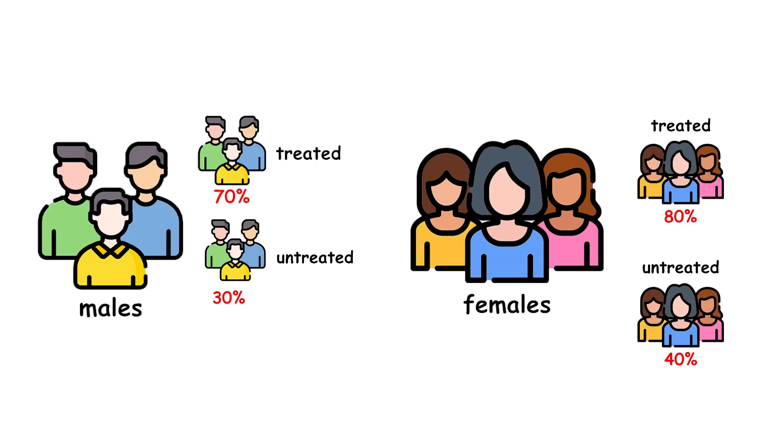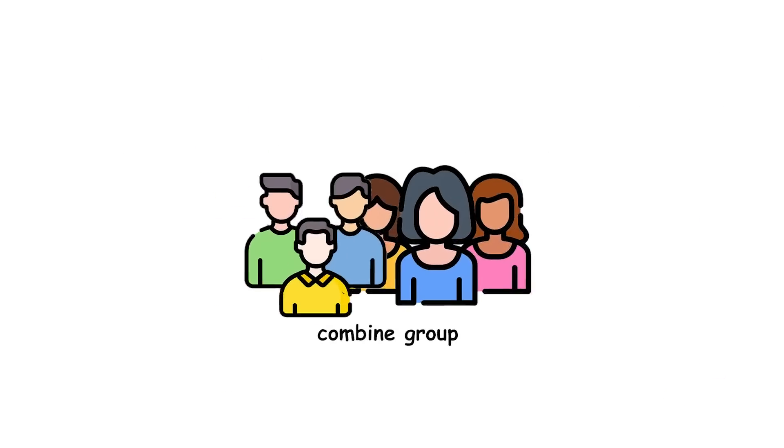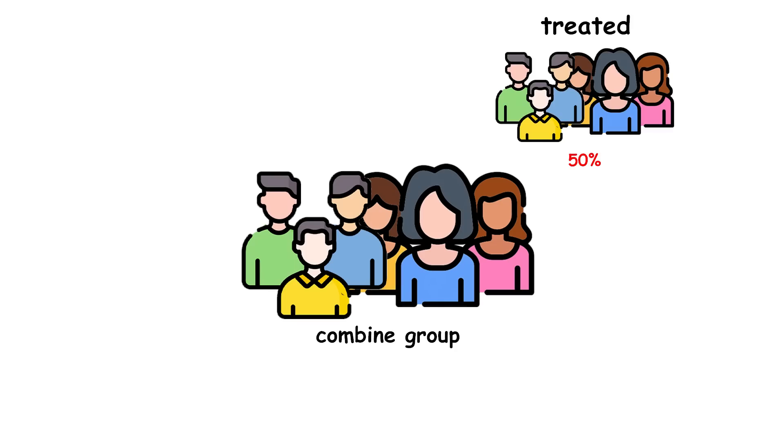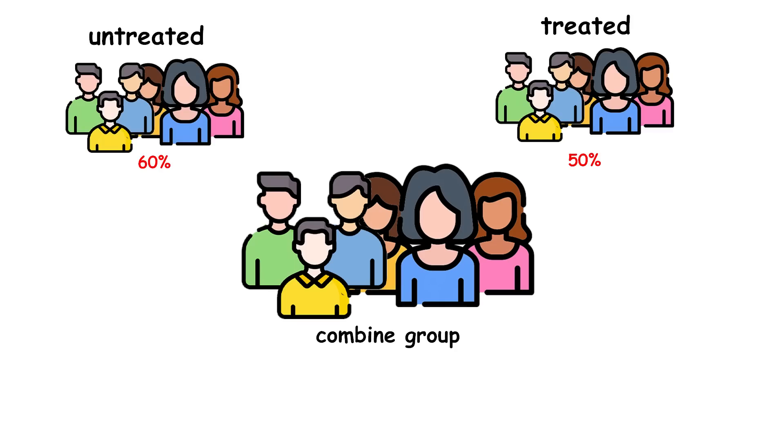Based on these separate groups, it seems like the treatment is very effective for both males and females. Now let's combine the data. In the combined group of males and females, 50% of treated patients survive, while 60% of untreated patients survive.